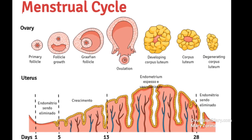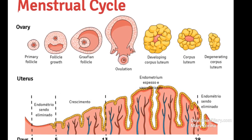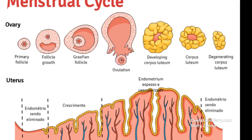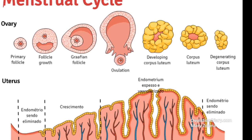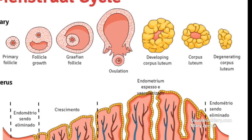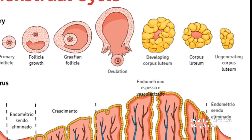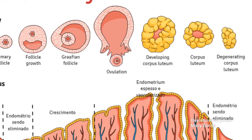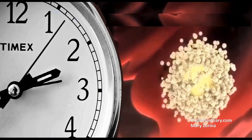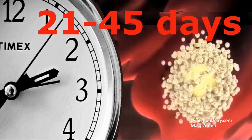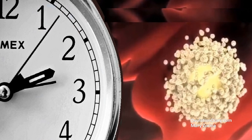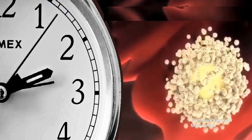If conception has not occurred, this function gradually decreases; the corpus luteum degrades after ovulation and completely dissolves in 2–3 months. The average menstrual cycle duration is 28 days, but this figure can vary significantly in any direction — 21 to 45 days. The individual features of the body affect the course of each stage.